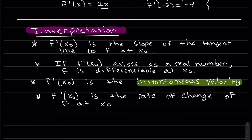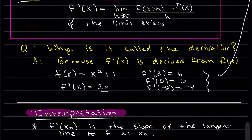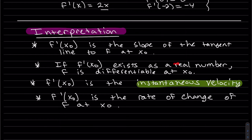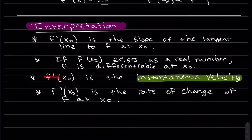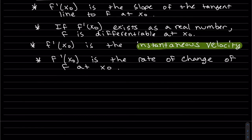The derivative at a point means several things: it's the slope of the tangent line to f at x naught, and if the derivative exists as a real number, f is differentiable at x naught — that limit must exist. The derivative at a point is also called the instantaneous velocity. Without taking the limit, that's the average velocity. More generally, it's called the rate of change of f at x naught.